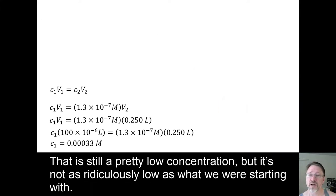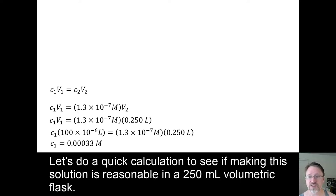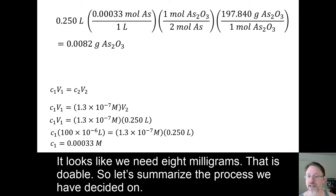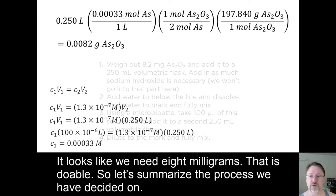That's still a pretty low concentration, but it's not as ridiculously low as what we were starting with. So let's do a quick calculation to see if making this solution is reasonable in a 250 milliliter volumetric flask. It looks like we need 8 milligrams. That's doable. So let's summarize the process we've decided on.